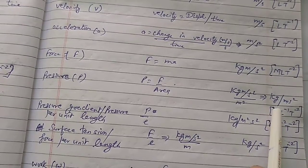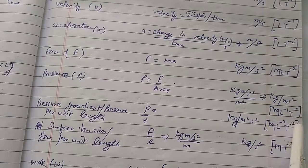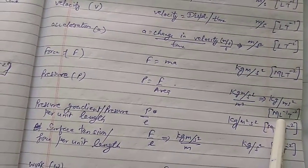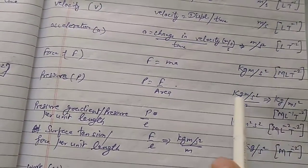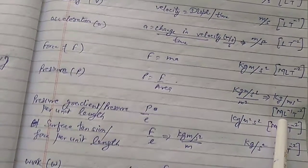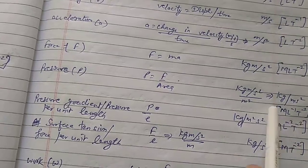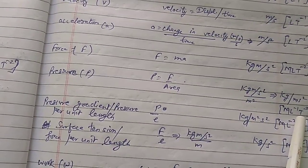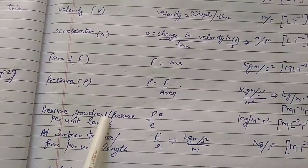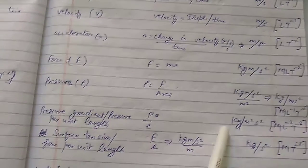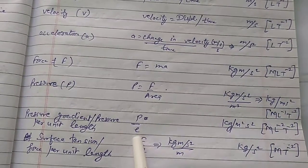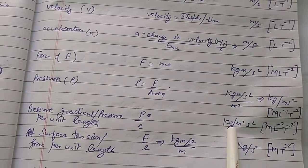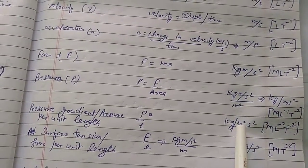Whenever you write the dimension, put it in brackets. If there is kg, write M; if there is meter, write L; if it is second, write T — because kilogram is the unit of mass, meter is the unit of length, and second is the unit of time, as these are the basic physical quantities in mechanics.